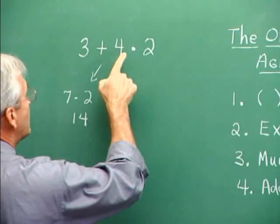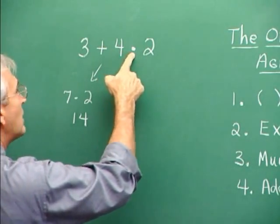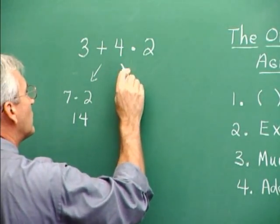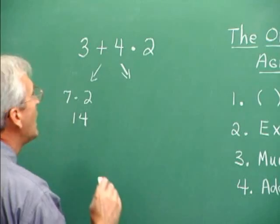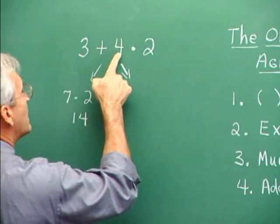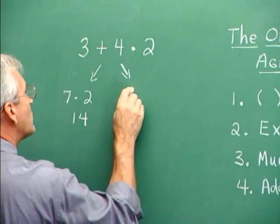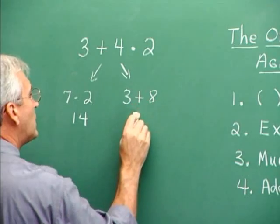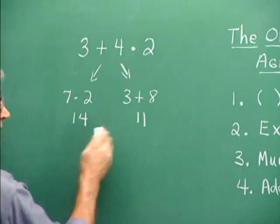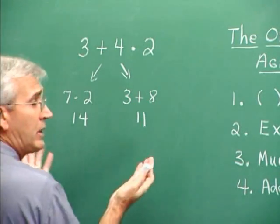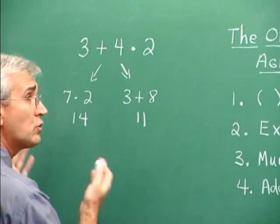And someone else might say, I see multiplication here, so why don't we multiply first? Another way to do it maybe is 3 plus, let's see, 4 times 2 would be 8, so 3 plus 8 would give us 11. These are different answers. One of these must be right and the other is wrong, but which one?